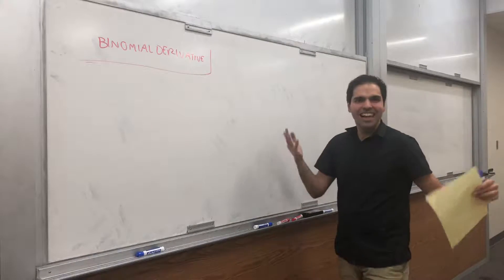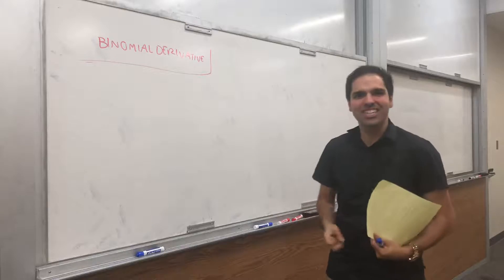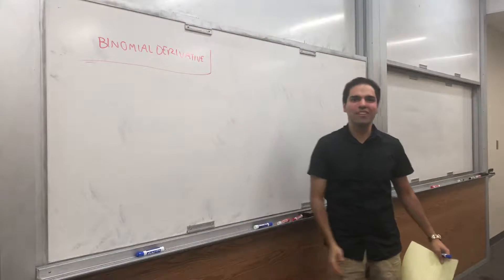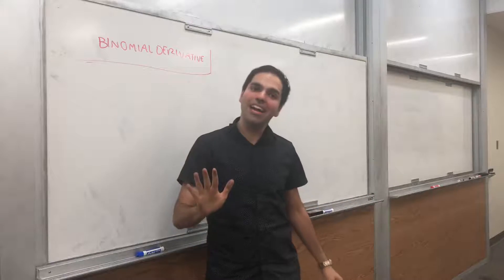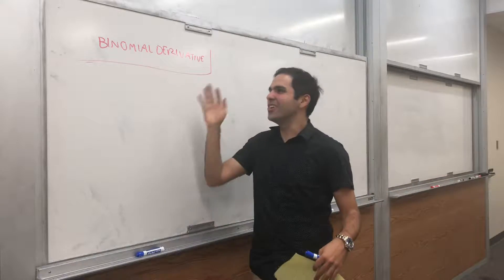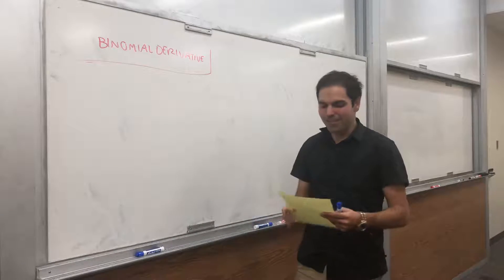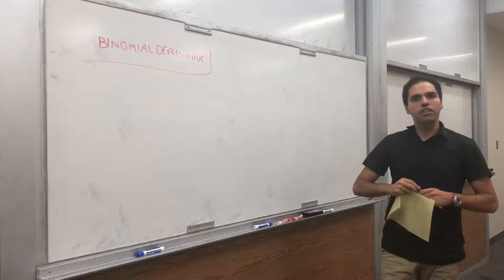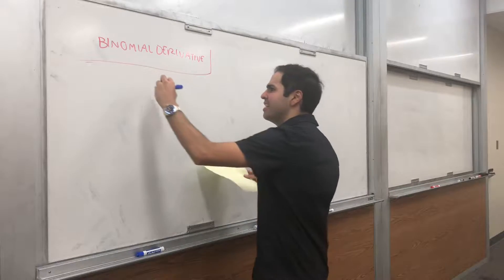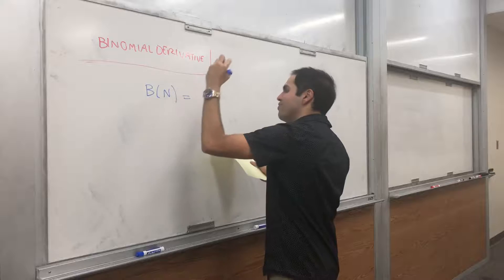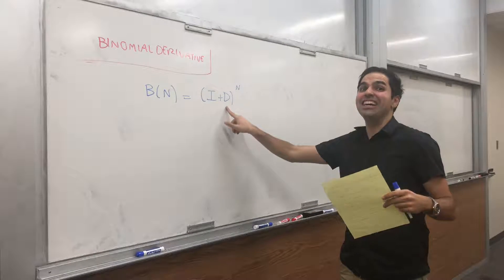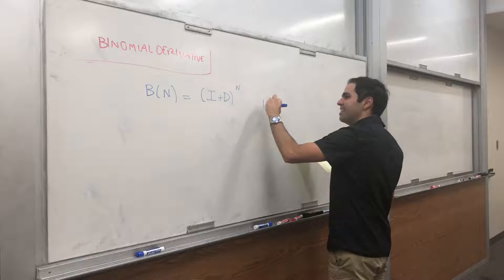Alright, thanks for watching. From the creator of the exponential derivative and the sine and cosine derivative, now comes the binomial derivative. Someone commented on that idea — sorry I forgot your name — but it's a really cool idea so I wanted to make a video out of it. It's called the binomial derivative, or strictly speaking, the binomial derivatives, because there is one for every n. And the n-th one is just: (I + D)^n, where I is the identity function, so I(f) = f, and D is the derivative.